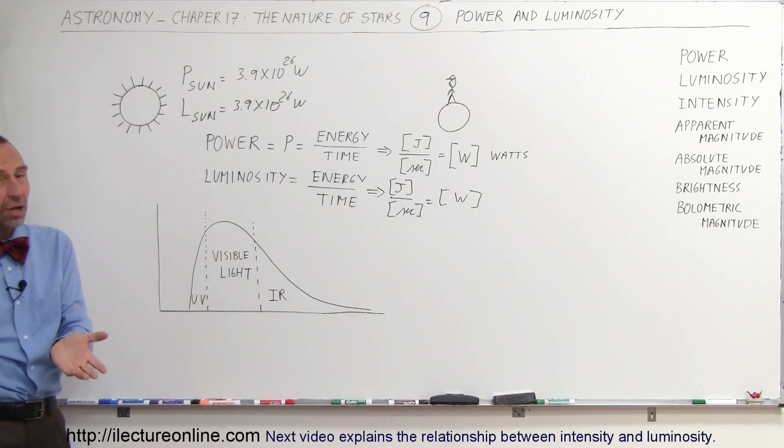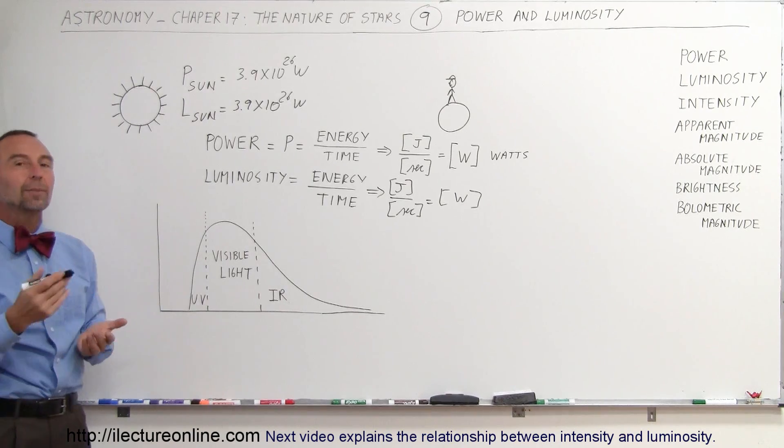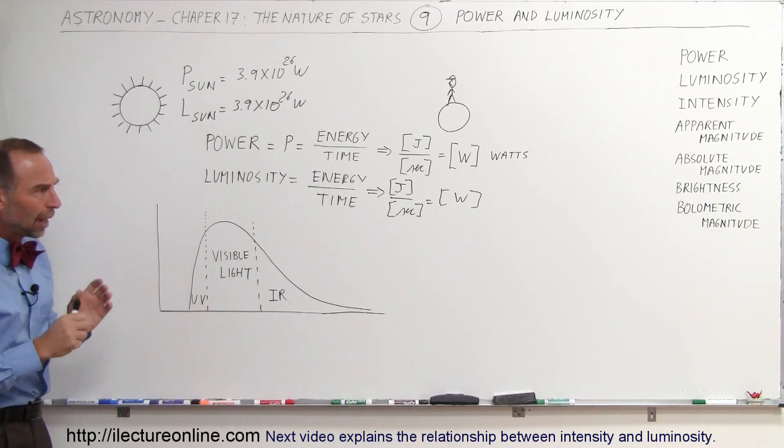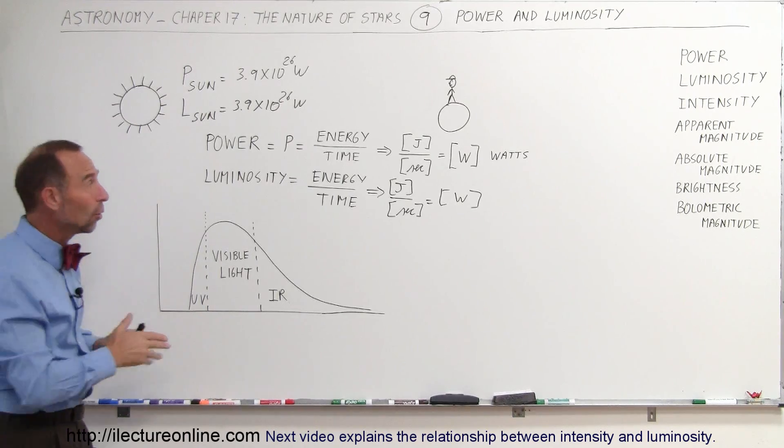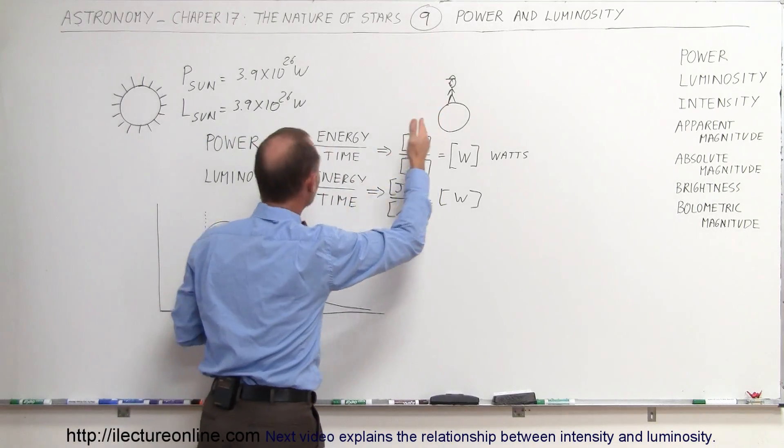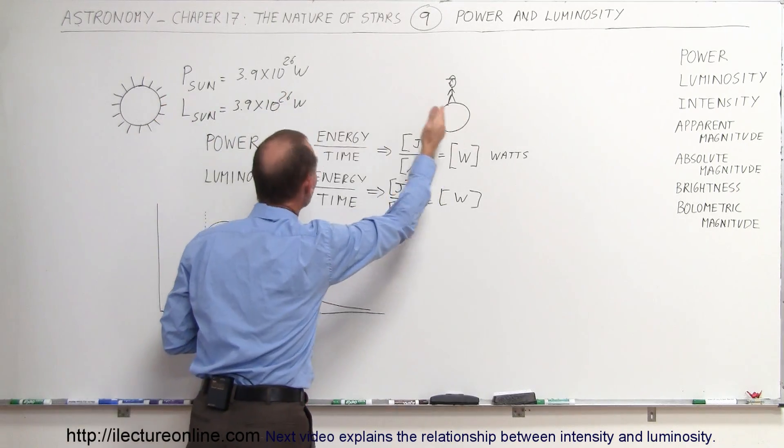So astronomy talks about luminosity, in physics we talk about power. Now this talks about how much energy an object puts out, so how much energy do we receive on the Earth, well that depends upon how far it is between the Sun and the Earth.